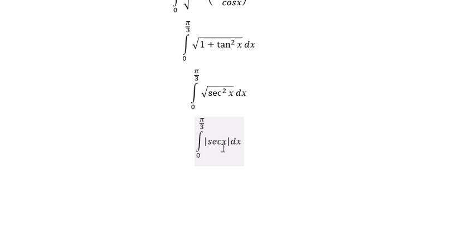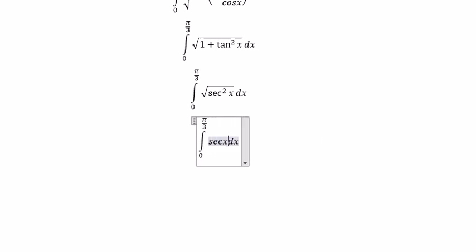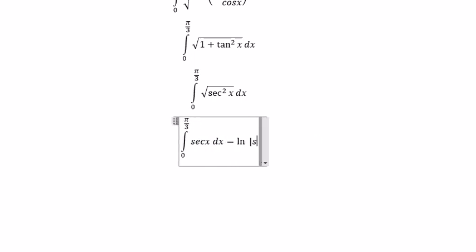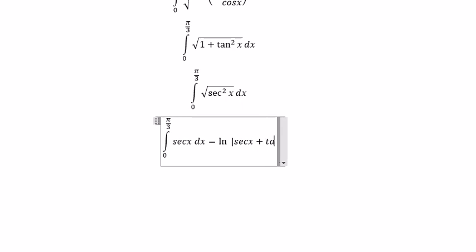We know that from 0 to π/3, sec x always provides a positive number, so we don't need the absolute value anymore. The antiderivative gives us ln of the absolute value of sec x plus tan x, evaluated with the bounds.